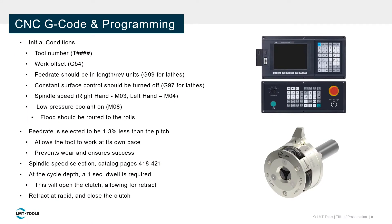This slide verbalizes much of the programming considerations. Initial conditions are established at the beginning of the program, including tool number, work offset, feed rate, surface speed control, spindle direction, and coolant commands. Generally, the spindle direction is M03, except in left-handed applications where M04 is required. Feed rate is always selected to be one to three percent less than the pitch of the thread. This allows the tool to work the material at its own pace, preventing wear and ensuring success.